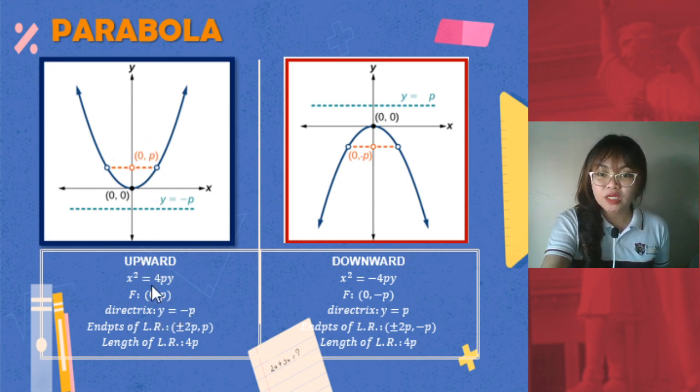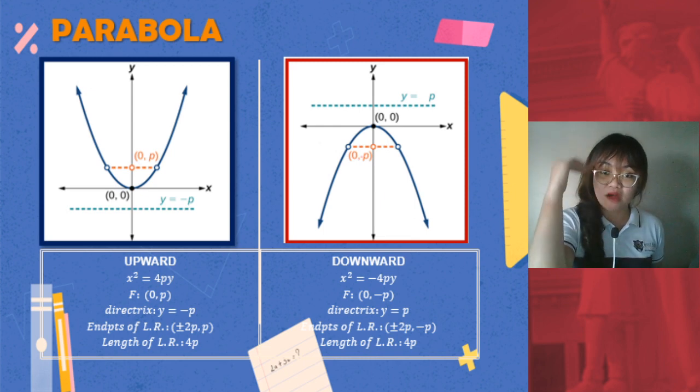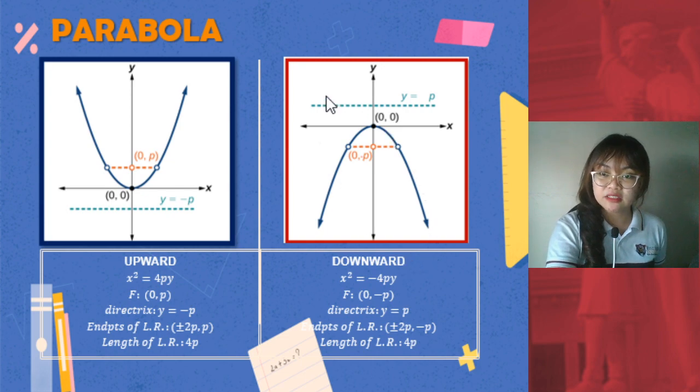For the parabola opening upward, you would notice that the directrix is negative because it reflects the focus. Remember, this is your focus, and then it is reflected down here. Now if your focus is positive, automatically your directrix is negative if the vertex is at (0, 0). So contrary to that, if the focus is here at the negative side of our y-axis, since it's opening downwards, then your directrix now will be found above. That's why you have a positive directrix here.